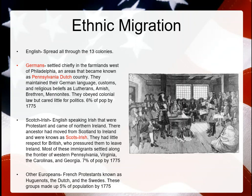Then you have the Scots-Irish — also known as the Scottish-Irish. These are English-speaking, Protestant people from Northern Ireland whose ancestors had moved from Scotland to Ireland. They didn't like the British very much and felt the British pressured them to leave Ireland. Most of these immigrants settled along the frontier of Western Pennsylvania, Virginia, the Carolinas, and Georgia. They made up about 7% of the population. Scots-Irish is an important term to remember.